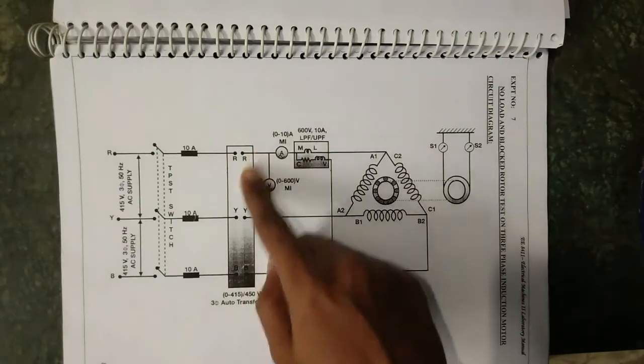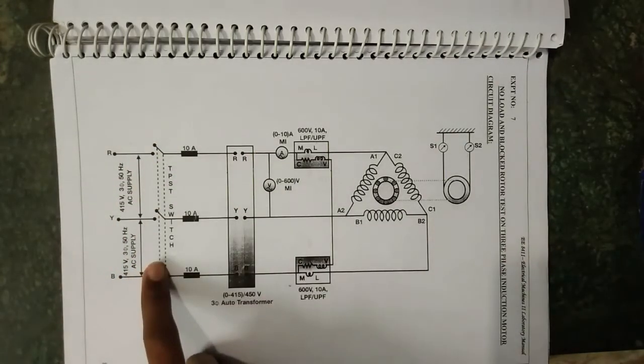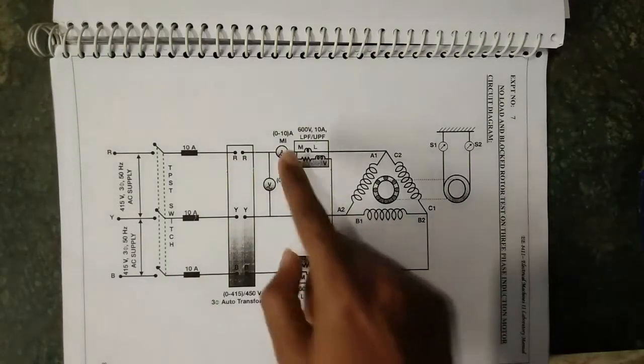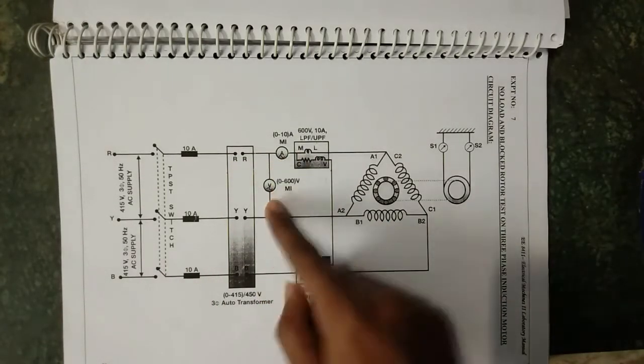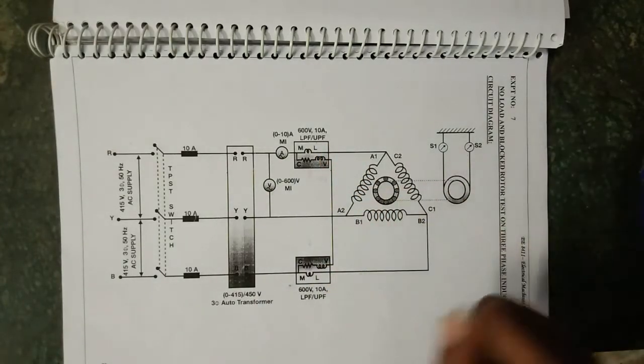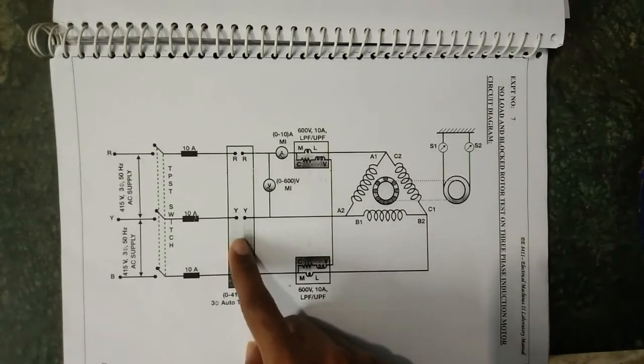The procedure for no-load test: with the auto transformer in the minimum position, the supply is switched on and the voltage is increased to rated voltage. All the meter readings—ammeter, voltmeter, and the two wattmeter readings—are noted down under this no-load condition. The auto transformer is brought back to the minimum position and then the supply is switched off.